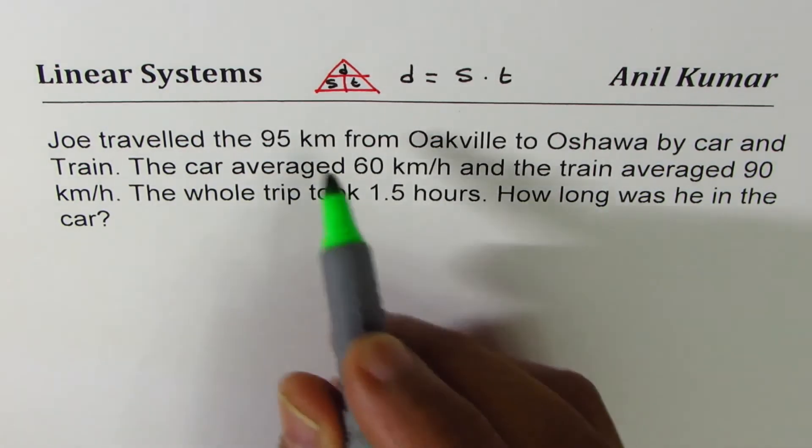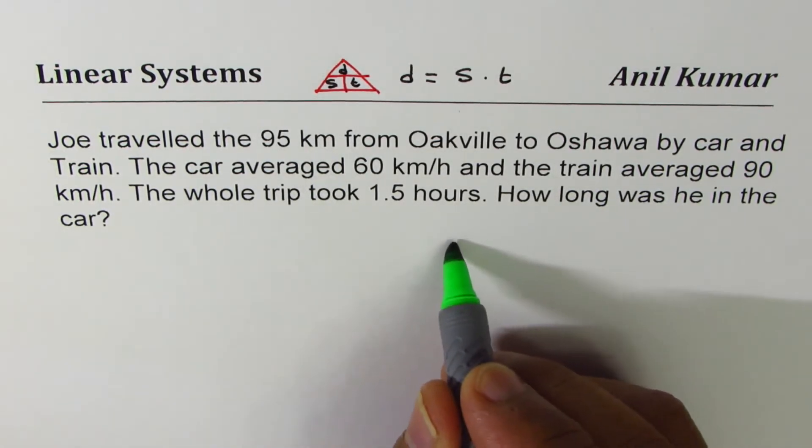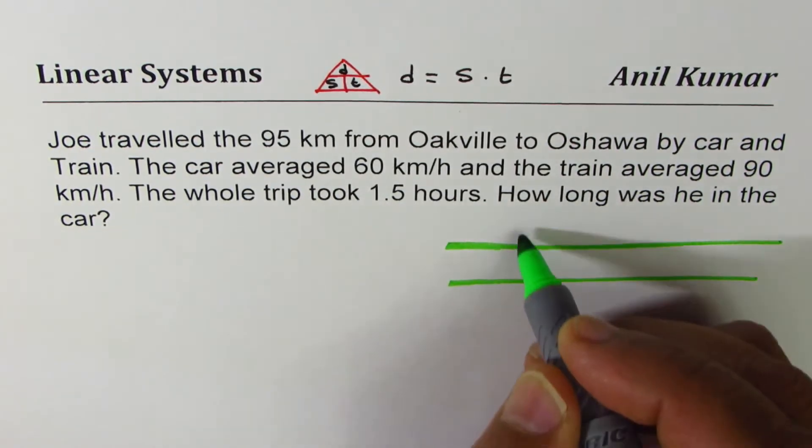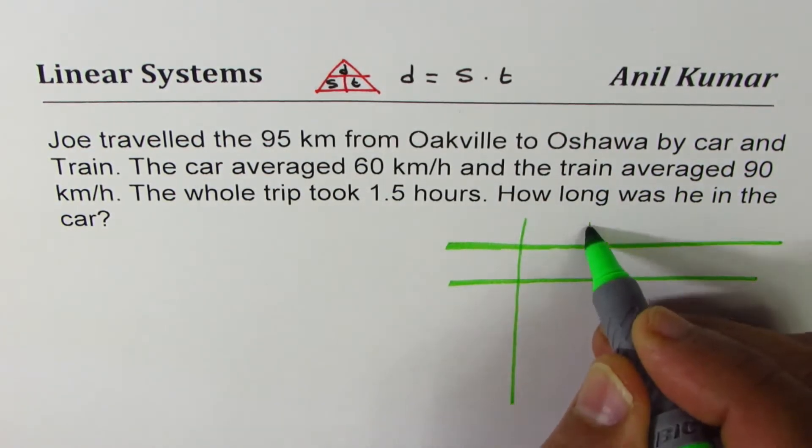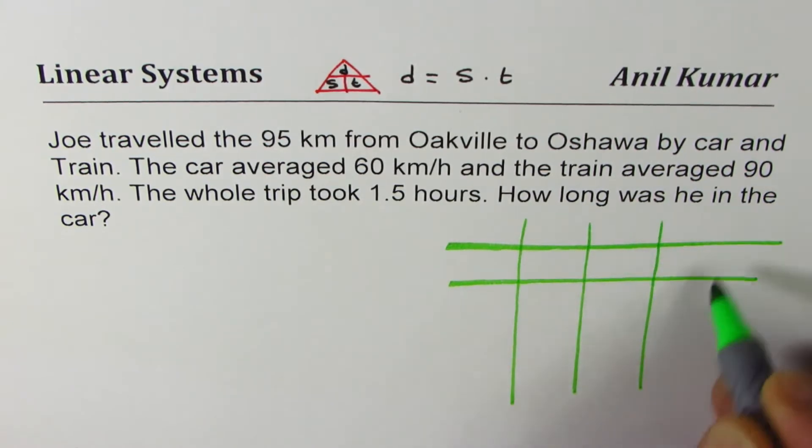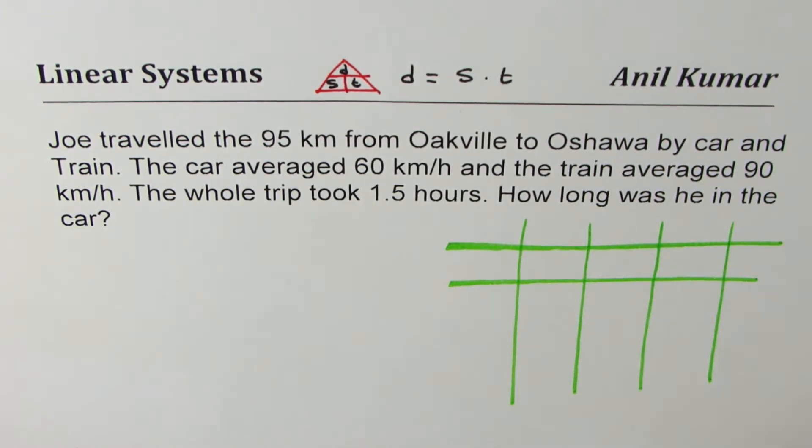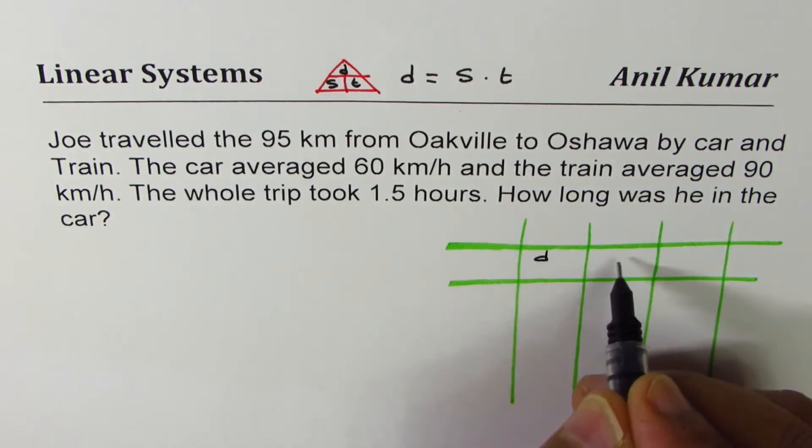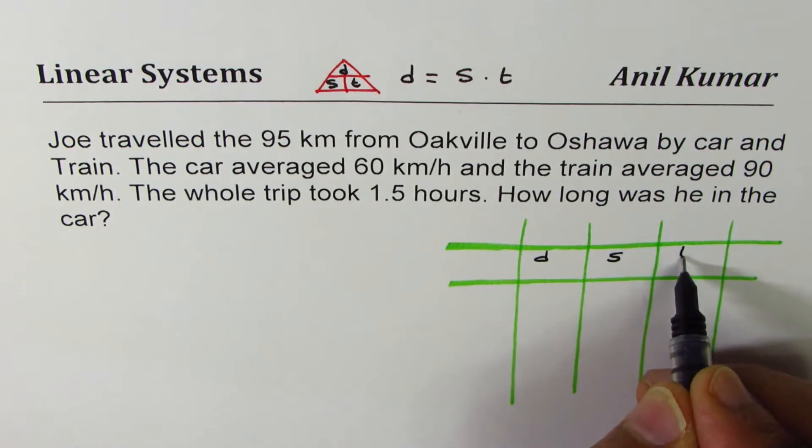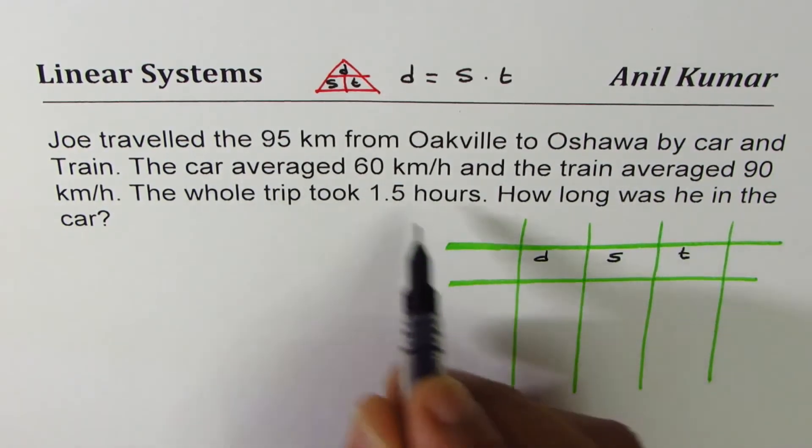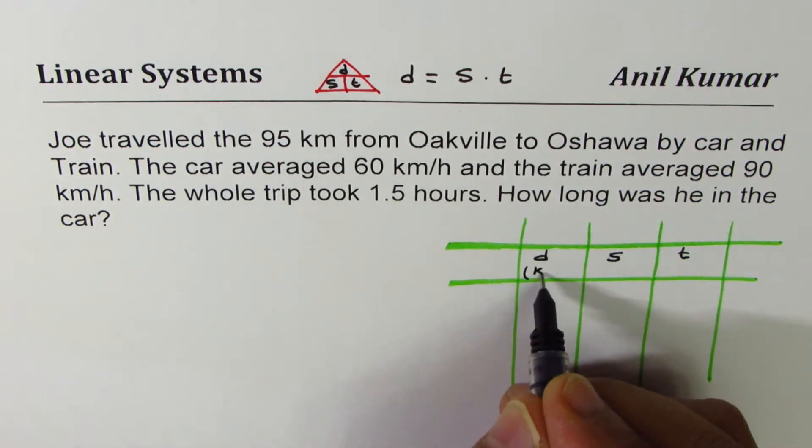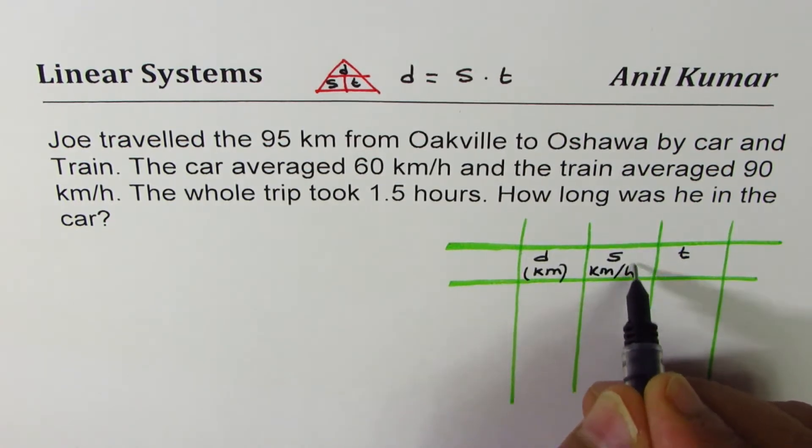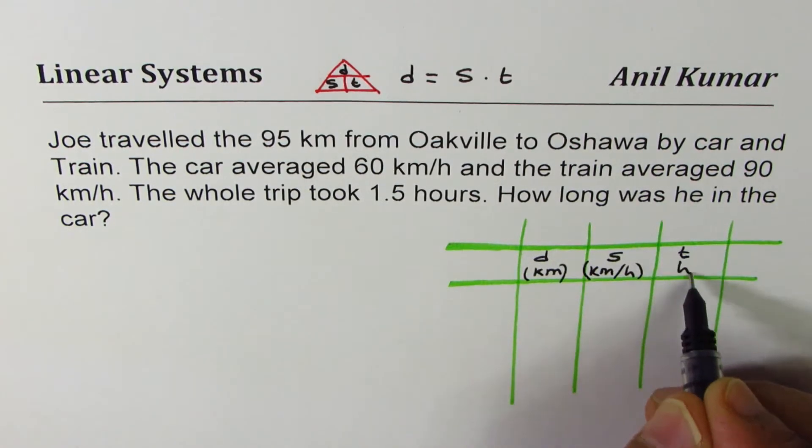To solve any problem relating these three, we can actually make a table with distance, speed and time. So let us say here we have distance D, speed S and time T. In the given question, distance is in kilometers, speed is in kilometers per hour, time should be in hours.